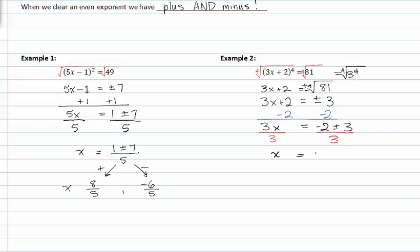Now I'm going to divide both sides of my equation by three to isolate x. So now I have x is equal to negative two plus or minus three divided by three. Allowing for both options, my positive possibility would be x is equal to negative two plus three or one-third.